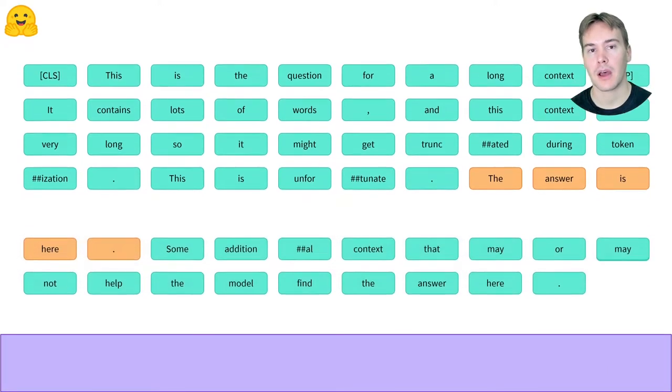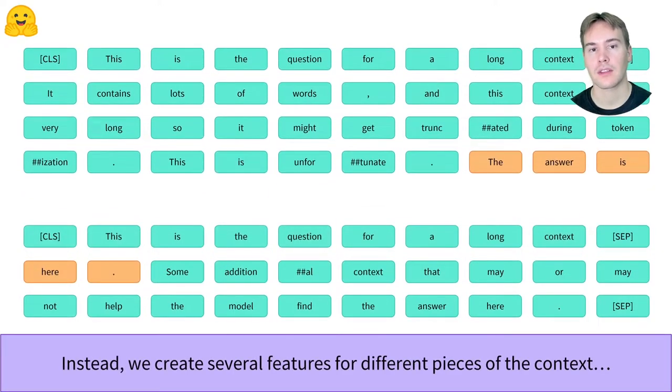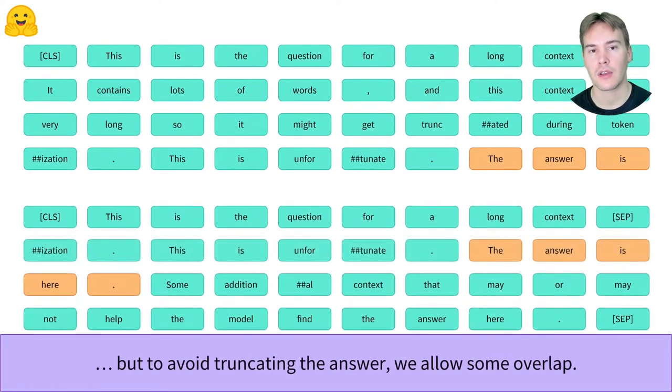So we should keep the truncated part as a separate feature instead of discarding it. The only thing we need to be careful with is to allow some overlap between separate chunks so that the answer is not truncated and that the feature containing the answer gets sufficient context to be able to predict it.